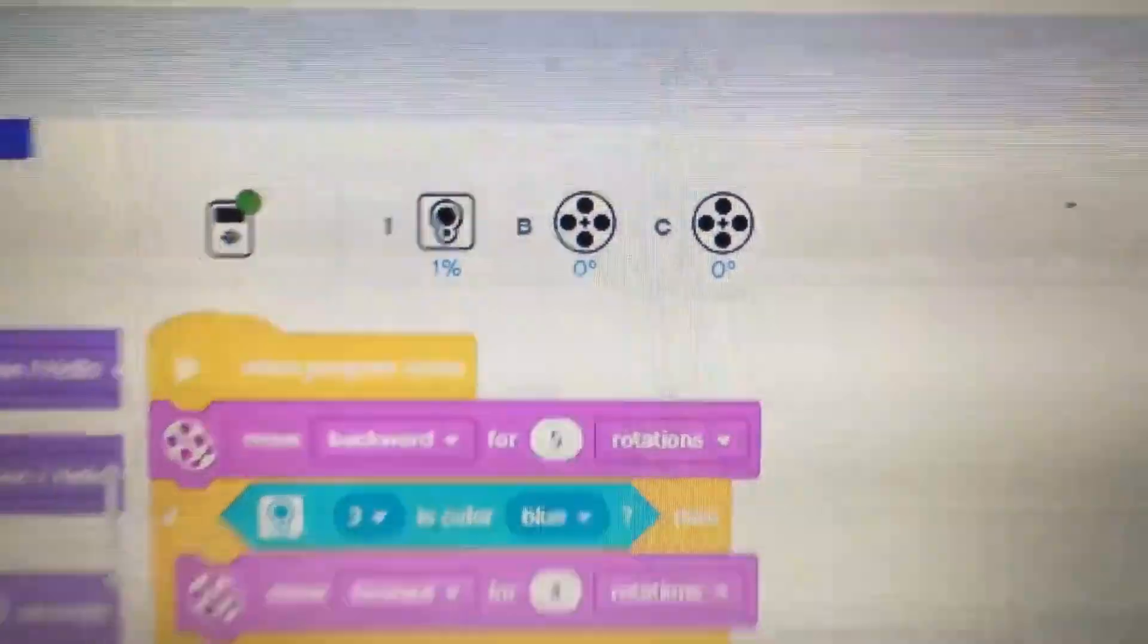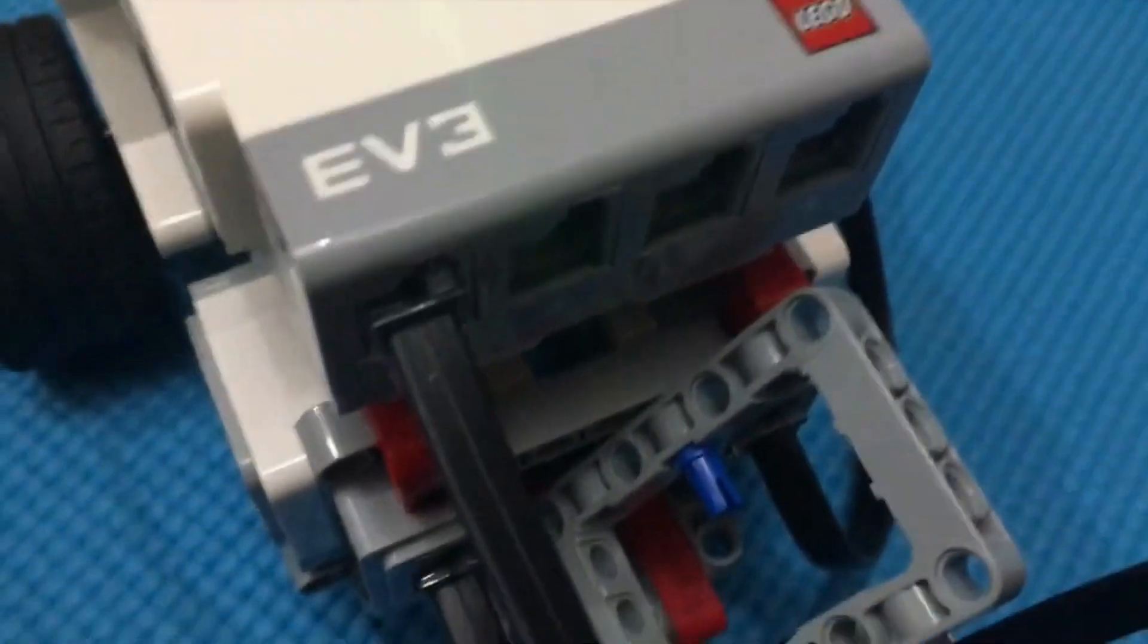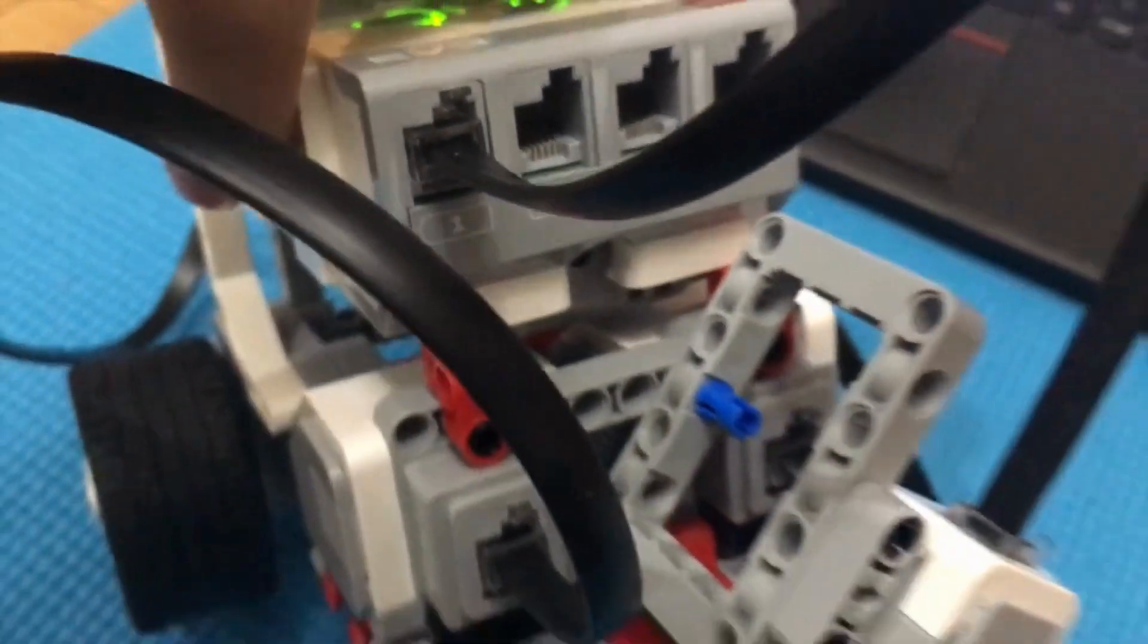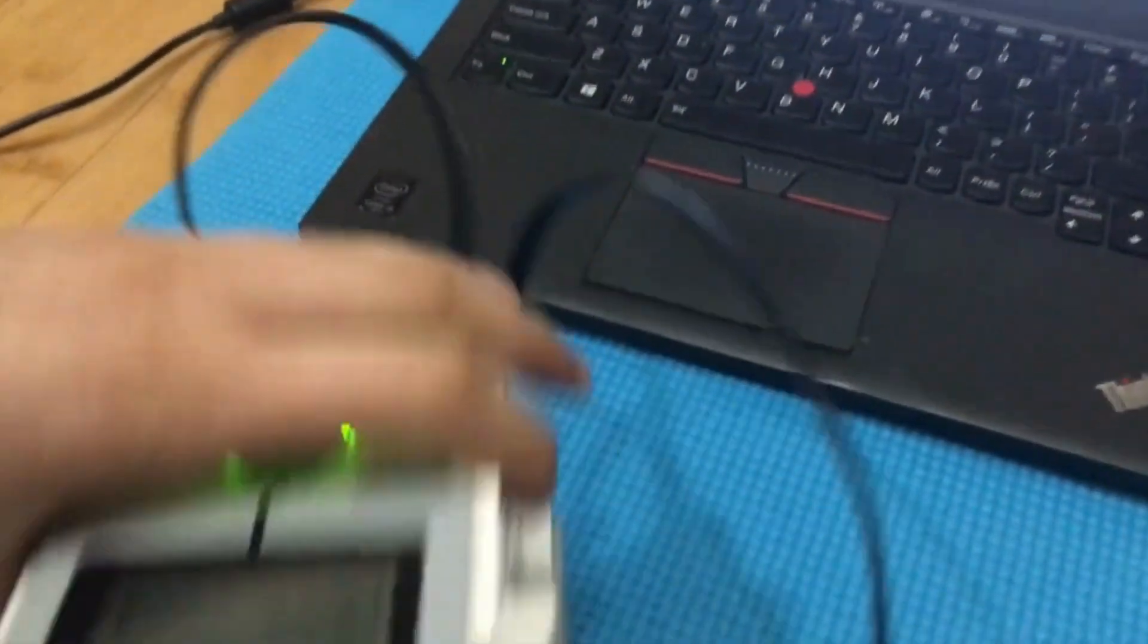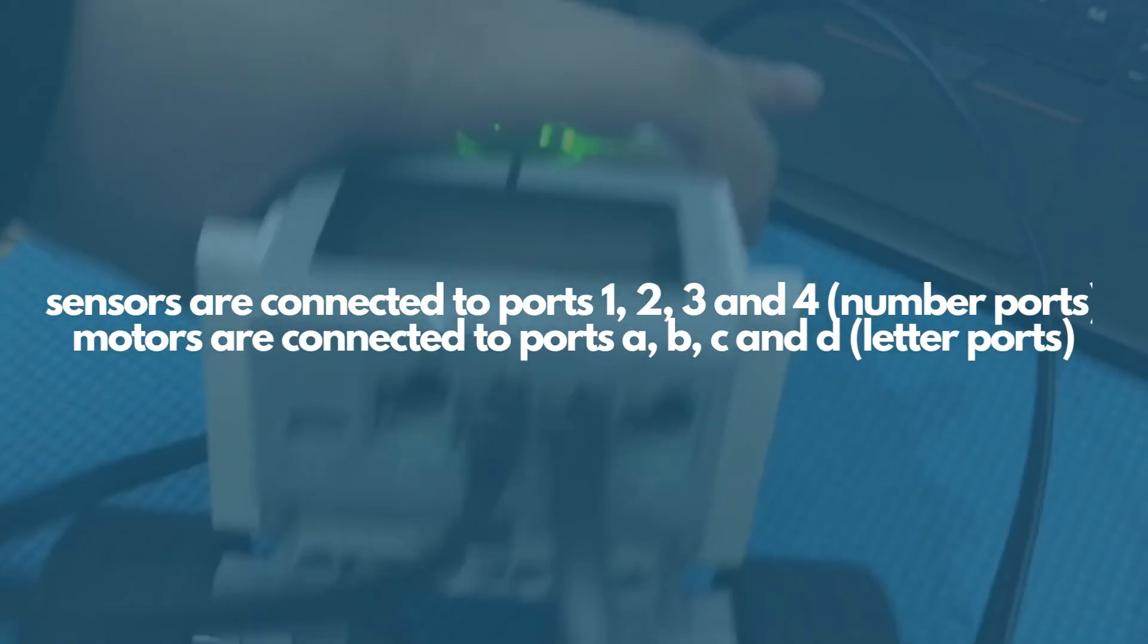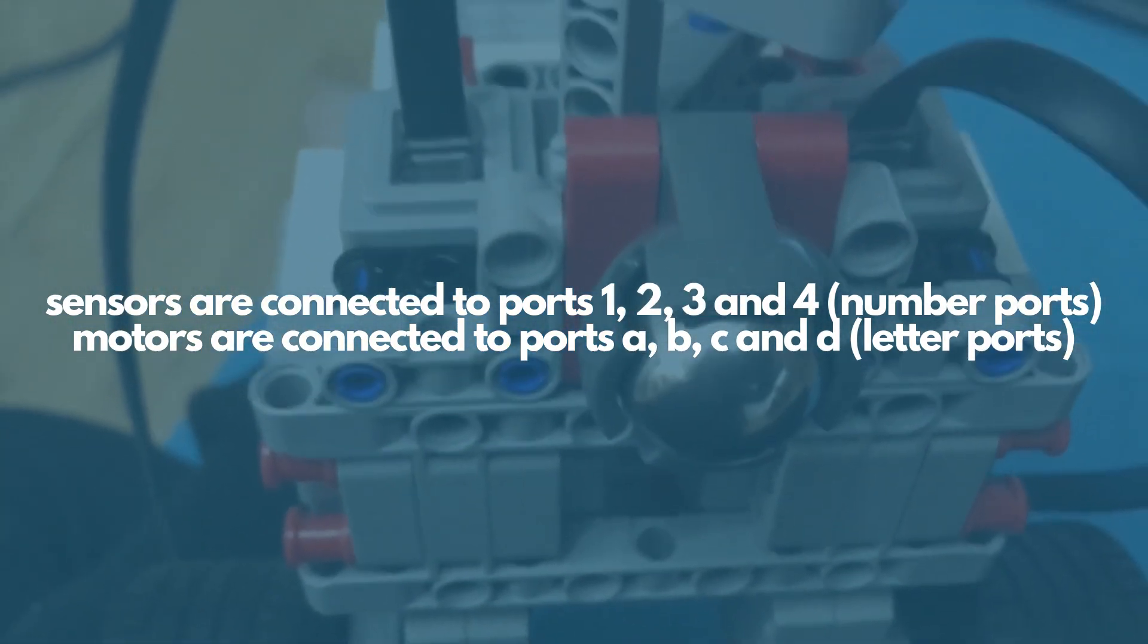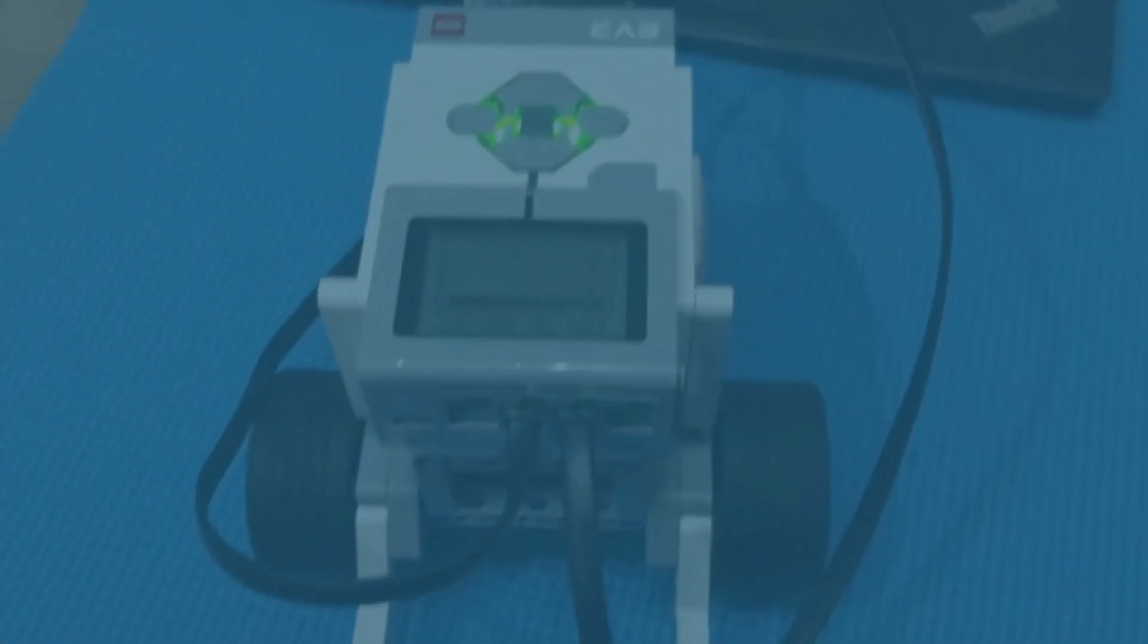Another thing you want to take note of is making sure your sensors are connected into the right ports. Sensors will be connected to the number ports—think of numbers and sensors—while motors will be connected into the alphabetically labeled ports. So A, B, C, and D will be for the motors, while one, two, three, and four will be for the sensors. Make sure that what you have connected on your robot aligns with what you have programmed on your computer. It can be a really easy and common mistake to make, so it's always good to check.